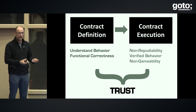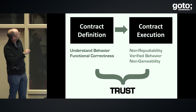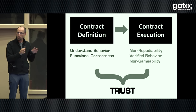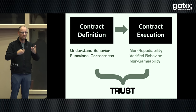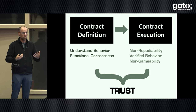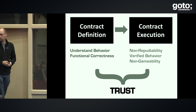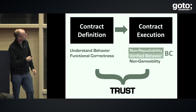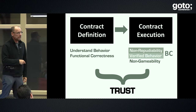It doesn't help if you have a correct execution infrastructure but a contract with a loophole — and I don't mean a software bug, I mean an actual logic fault. This is really important to understand because blockchains only help with one part. They help with this notion of non-repudiability.